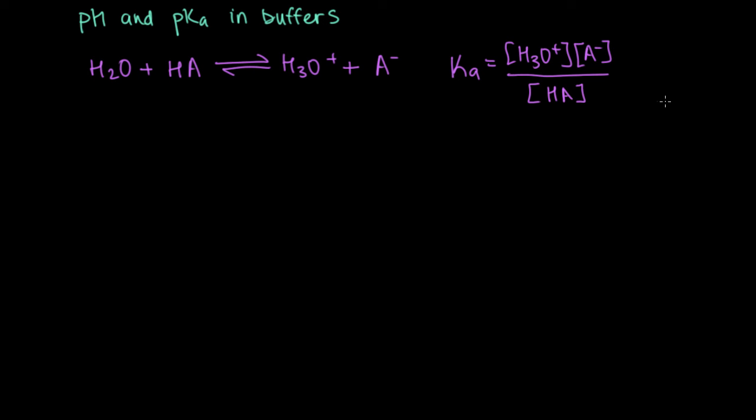Based on this expression for Ka, we can, and do in a separate video, derive the Henderson-Hasselbalch equation. So the Henderson-Hasselbalch equation just says that the pH is equal to the pKa plus the log of A minus over HA, where HA is our weak acid and A minus is its conjugate base.